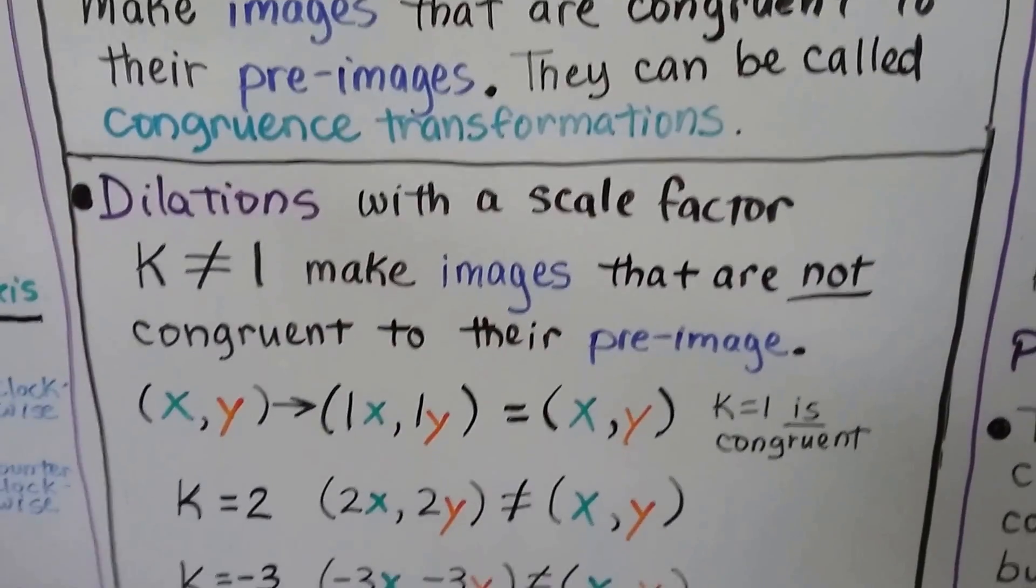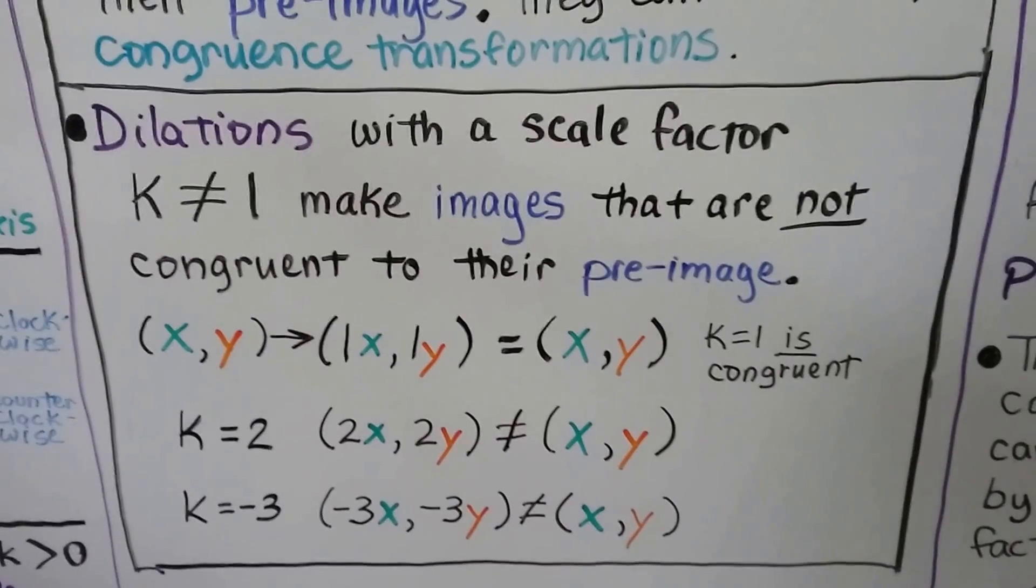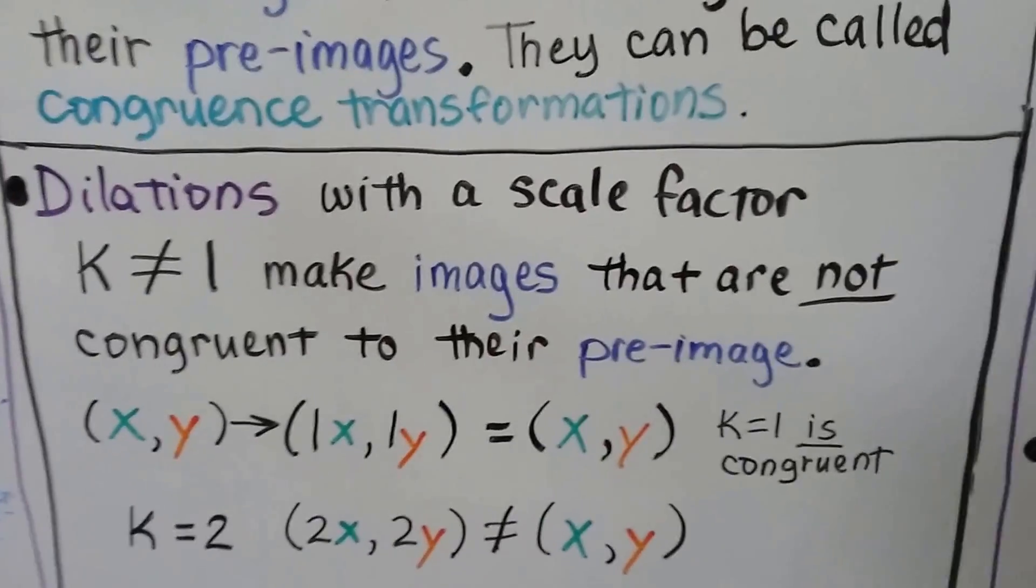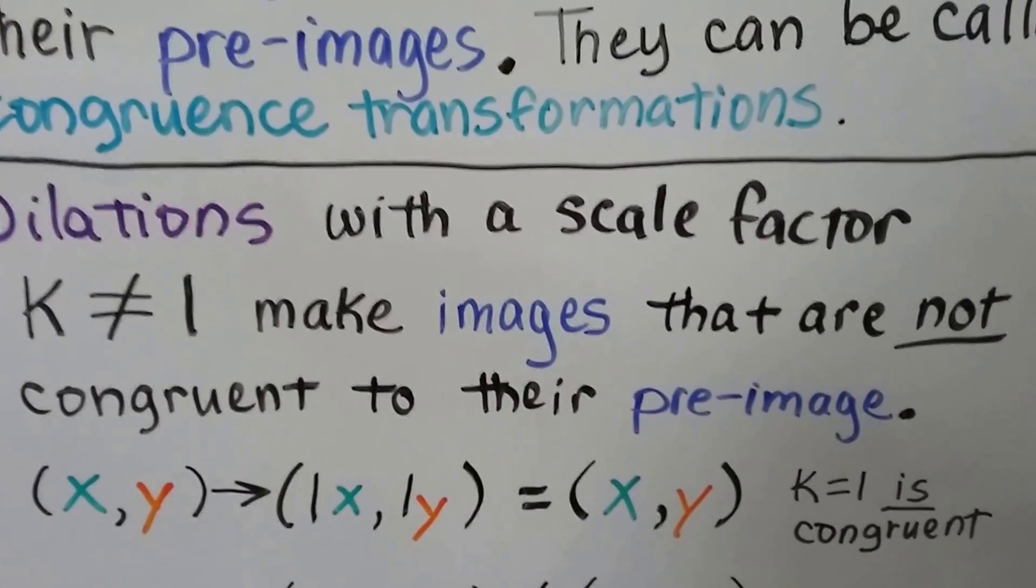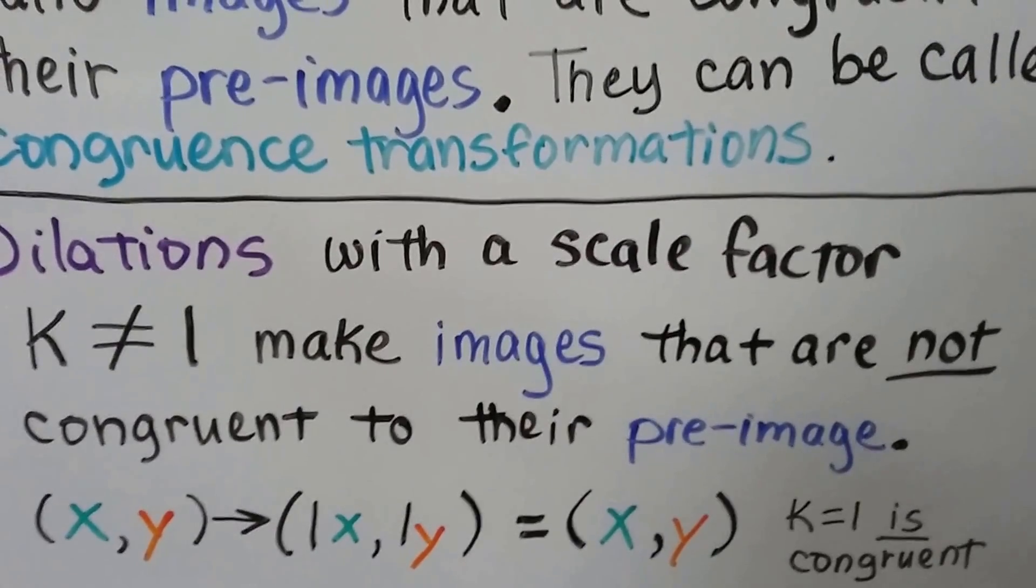On the other hand, dilations with a scale factor k is not equal to 1 make images that are not congruent to their preimage. So if k was equal to 1, we would have x, y maps to 1x, 1y. Well, then the x and y would stay the same. So that would be congruent.